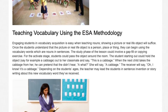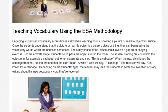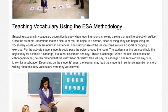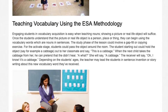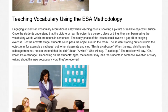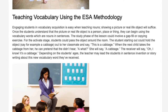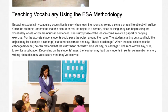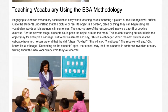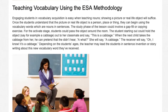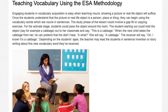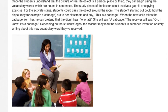The study phase of the lesson could involve a gap-fill copying exercise. For the activate stage, students could pass the object around the room. The student starting out could hold the object — say, a cabbage — out to her classmate and say, 'This is a cabbage.' When the next child takes the cabbage, he can pretend he didn't hear: 'A what?' She will say, 'A cabbage.' The receiver will say, 'Oh, I know. It's a cabbage.' Depending on the students' ages, the teacher may lead them in sentence invention or story writing about the new vocabulary word.